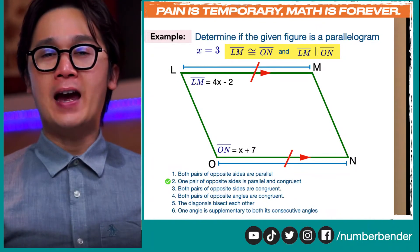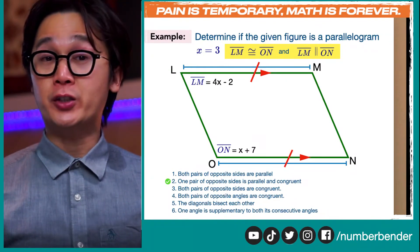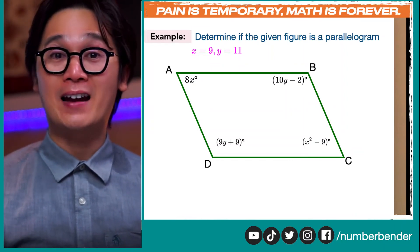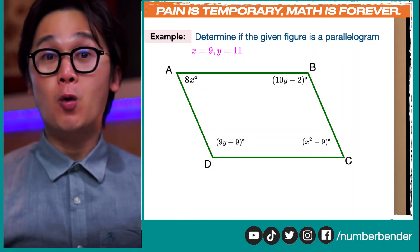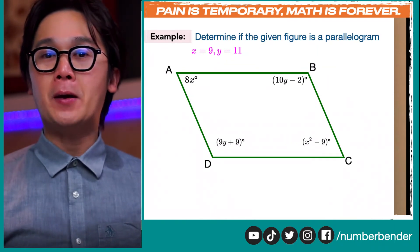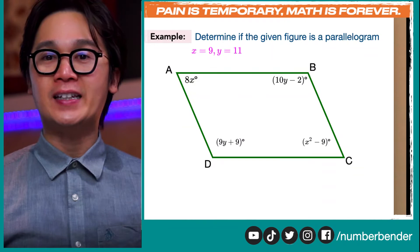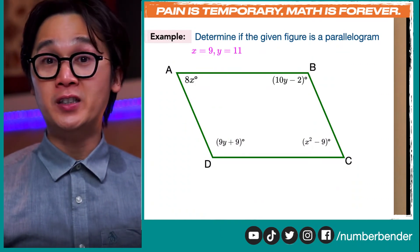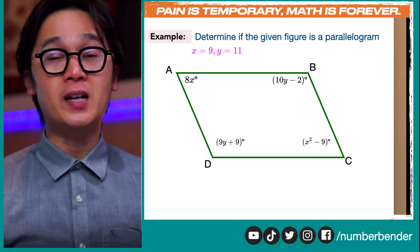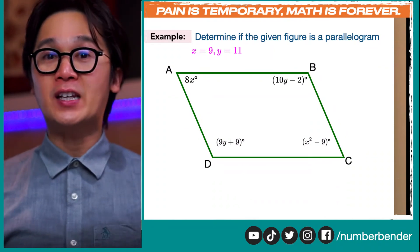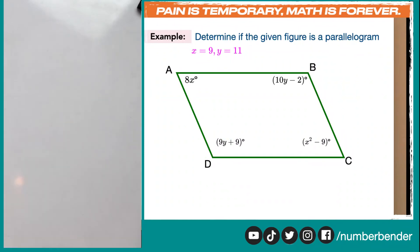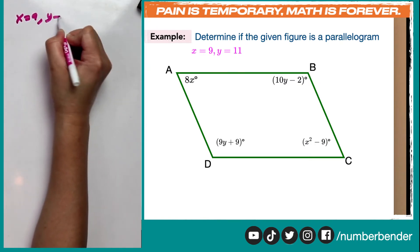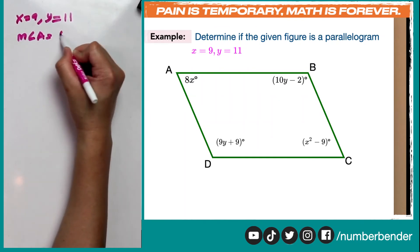Now for our second example, we have quadrilateral ABCD with angle expressions: angle A is 8x degrees, angle B is 10y − 2 degrees, angle C is x² − 9 degrees, and angle D is 9y + 9 degrees. We're given that x = 9 and y = 11. Let's compute the angles. Angle A = 8(9) = 72 degrees. Angle B = 10(11) − 2 = 110 − 2 = 108 degrees.